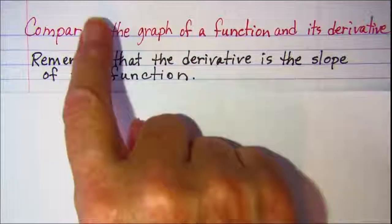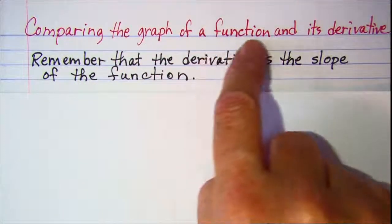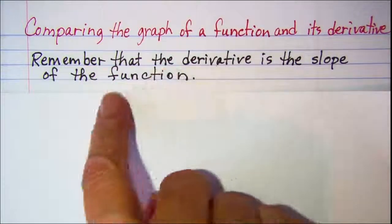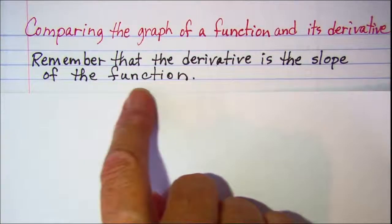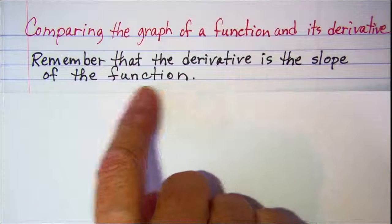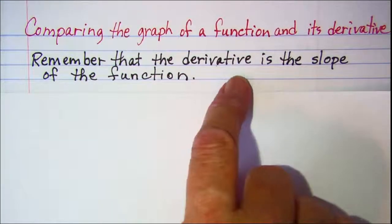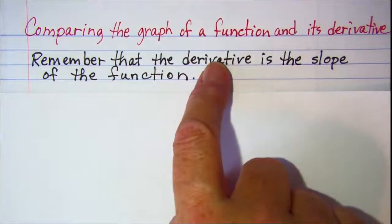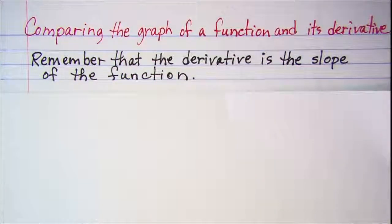In this video we will be comparing the graph of a function and its derivative. Remember that the derivative is the slope of the tangent line to the function. So as we're doing this, just remember that when you're talking about the derivative, you're talking about the slope of the original function.